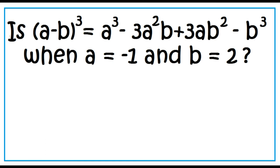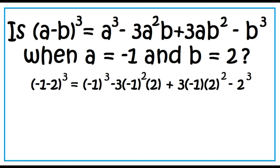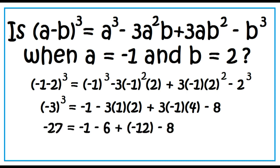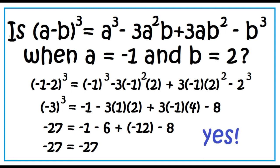Is the cube of a minus b equal to a cubed minus 3a squared b plus 3ab squared minus b cubed, when a equals negative 1 and b equals 2? Substitute negative 1 for a and 2 for b, then perform the indicated operations. The result is negative 27 equals negative 27. The answer is yes.